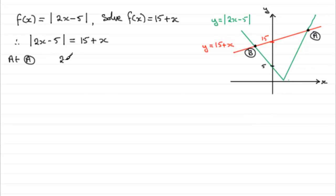And, you can see that if we subtract x from both sides and add 5 to both sides, you'll have 2x - x, which is x equals 15 + 5, which is going to be 20. So, you've got x = 20. This point down here would be at 20. So, that's one solution.